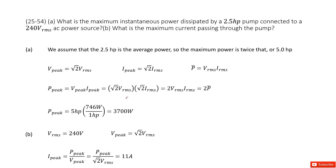The peak voltage equals square root of 2 times the RMS voltage, and the peak current equals square root of 2 times the RMS current. Substituting these two terms into the power function, we can simplify to get 2 times V_RMS times I_RMS.